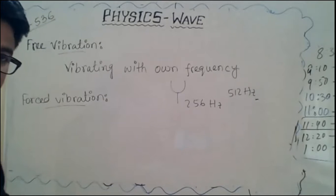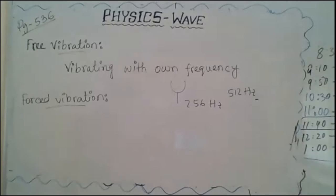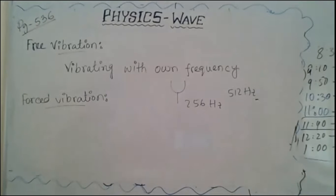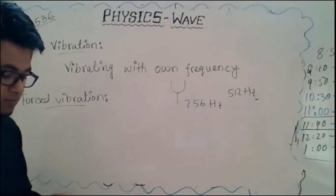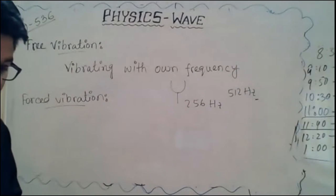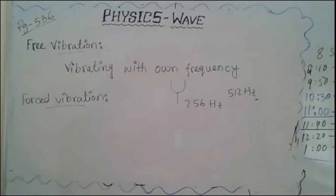Depending on the density, the frequency might change; depending on the shape it might change; and elasticity is also a factor that determines the frequency. Vibration of this type is called natural or free vibration — it is your own vibration, nobody is forcing you. The vibration of a body at its own frequency is called its natural or free vibration. The vibration of a simple pendulum is an example of free vibration.